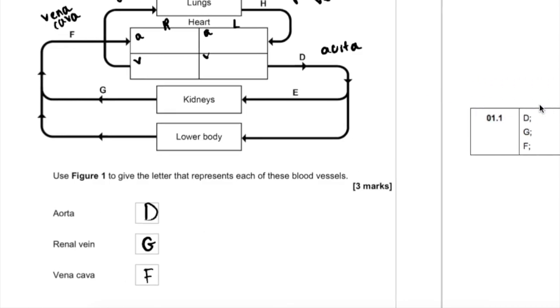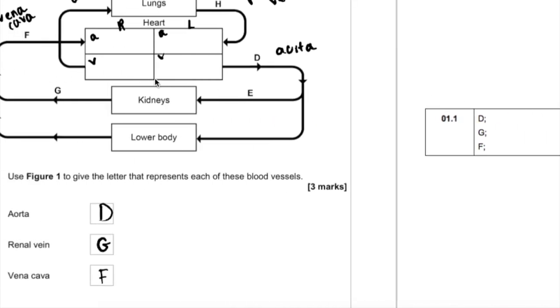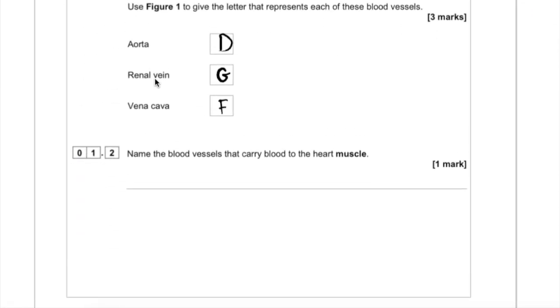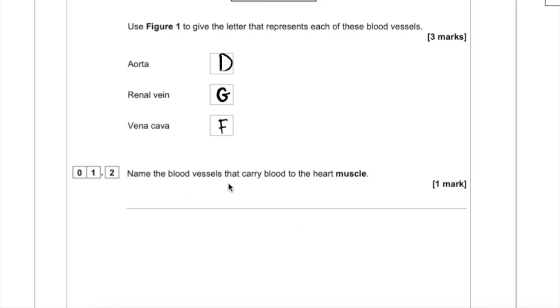And you've got a mark for each of them, so D, G and F. And then next, name the blood vessels that carry blood to the heart muscle. So this is just simply the coronary arteries. And actually, only 31.6% of students scored this mark.